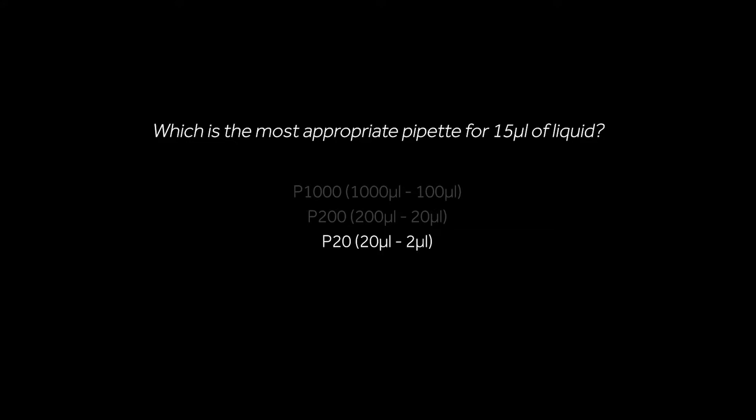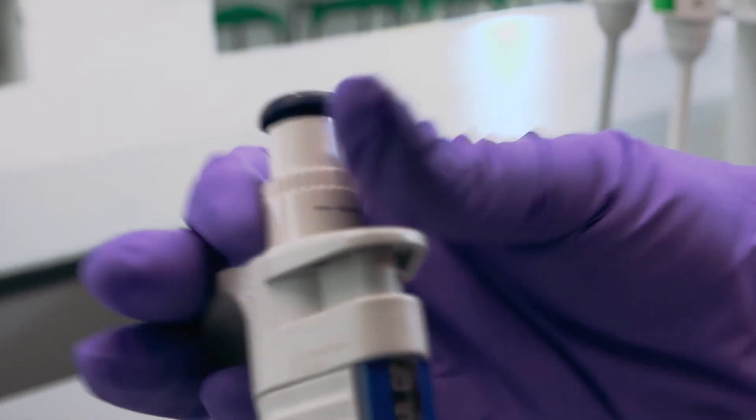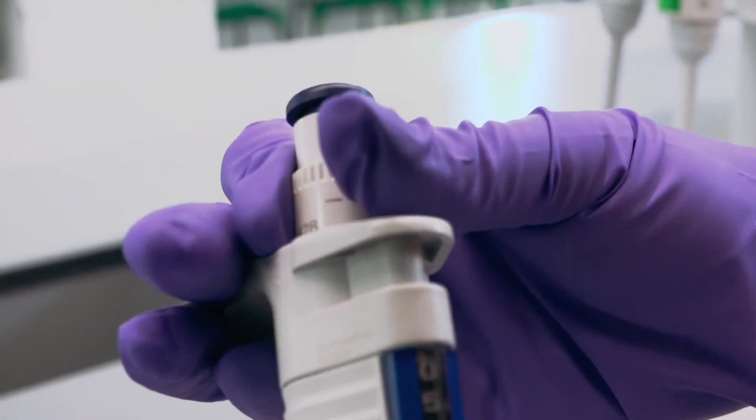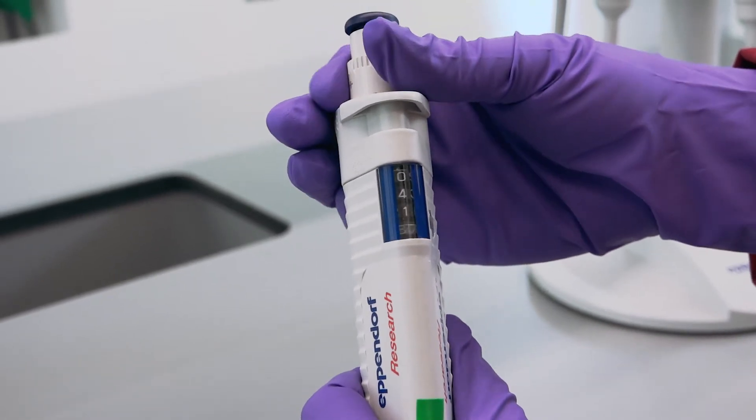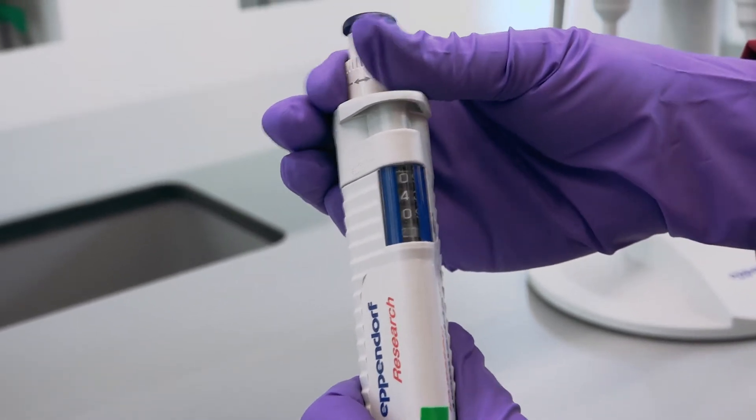Position the pipette so you can see the dial and then rotate to set the volume. The value on the dial should be set to the number of microliters required, but the dials do vary with pipette type.